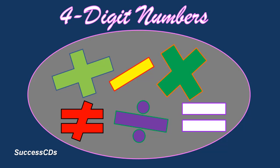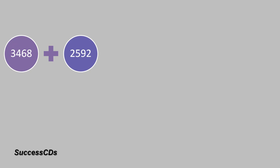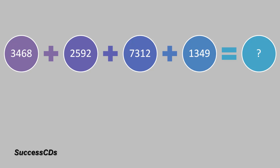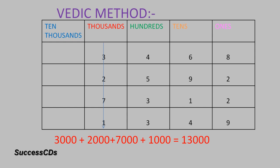Now let us see another example with four-digit numbers: 3468 plus 2592 plus 7312 plus... You have to add up these four four-digit numbers. As per the Vedic method, first of all we add the thousands place numbers with their place values: 3000 plus 2000 plus 7000 plus 1000 gives us 13,000. So you just write down 13,000 on a paper.